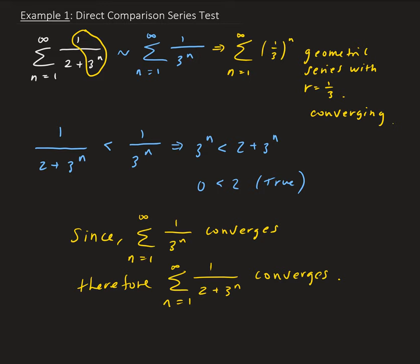So that's how the direct comparison works. You have to pick a series that resembles the original one, and then determine whether it's diverging or converging. In this case, the one we chose is converging, and then we were able to use that as an upper bound.